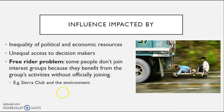One way that interest groups try to encourage membership is by giving selective benefits. For example, if you are part of AARP, you get a 10% discount on a donut from Dunkin' Donuts — or some type of benefit involving a donut. Certainly encouraging membership.